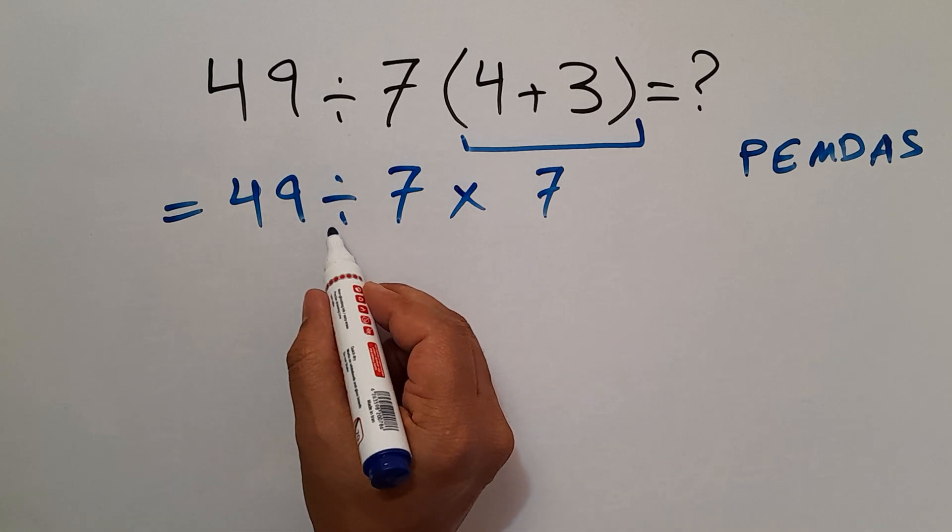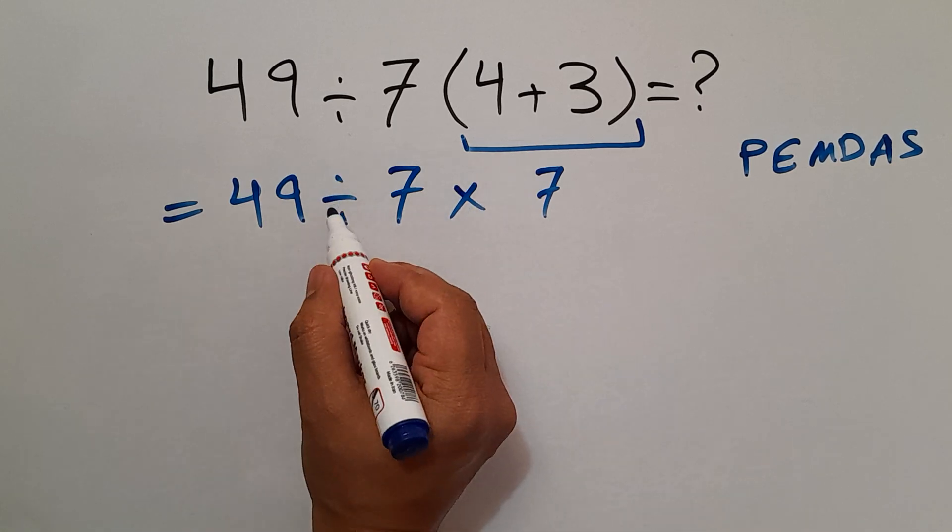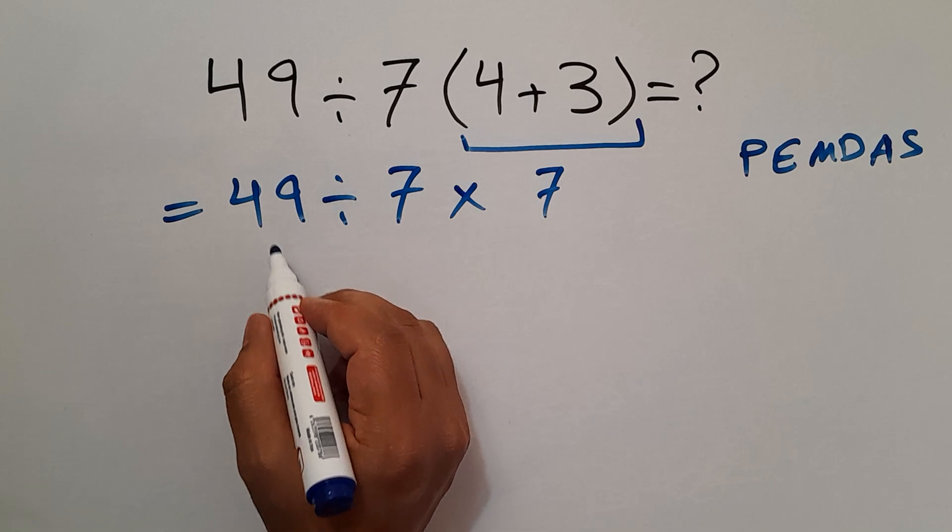And now we have one division and one multiplication. As we know, multiplication and division have equal priority and we have to work from left to right.